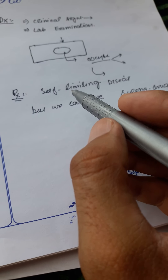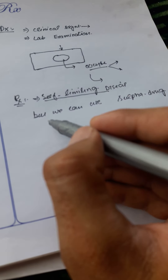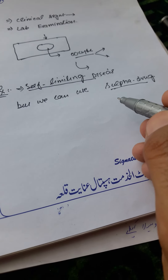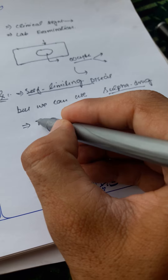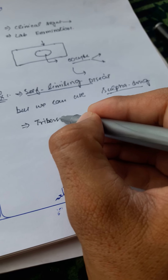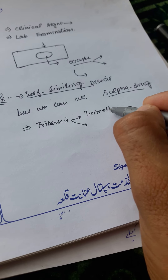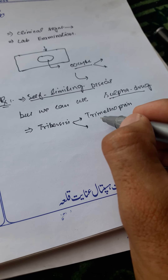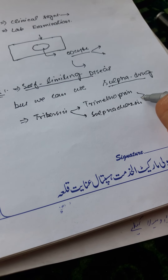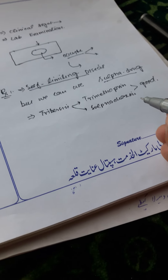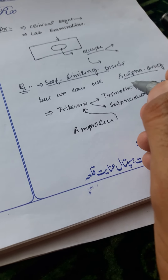The treatment of coccidiosis — as we know, coccidiosis is a self-limiting disease, but we can use sulfa drugs for treatment. The drug I use, with the brand name Tribersen, is a combination of trimethoprim and sulphadiazine, and it has good results in coccidiosis. We can also use Amprolium along with Tribersen.